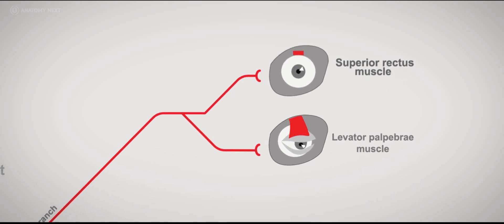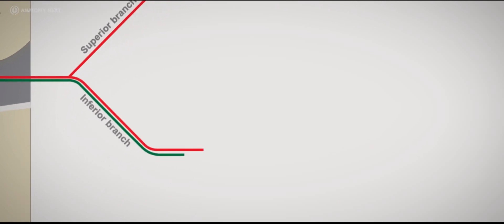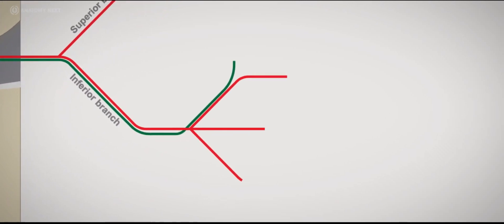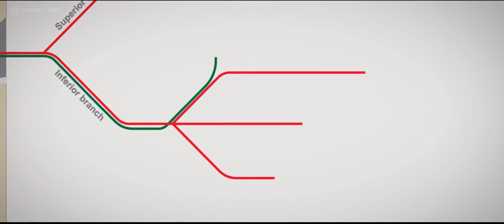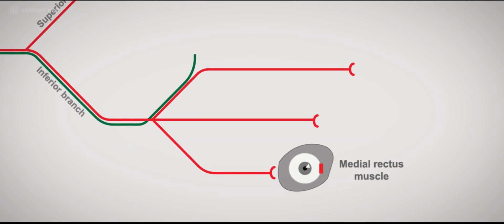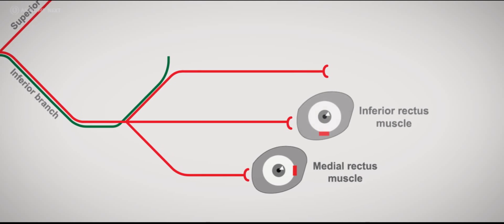However, the inferior division carries the preganglionic parasympathetic fibers along with the motor fibers and separates into medial, central and lateral branches. The medial branch enters the ocular surface of the medial rectus muscle. The central branch enters the ocular surface of the inferior rectus muscle.